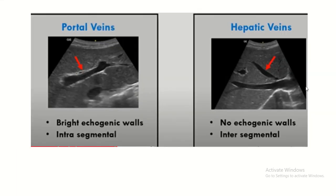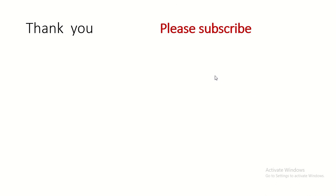So the portal vein and hepatic vein can be easily differentiated: a bright echogenic wall is present in the portal vein, and no echogenic wall is present in the hepatic vein. This is all about the vasculature of the liver with sonographic correlation. If you like this video please press the like button and subscribe to the channel. Thank you for watching.